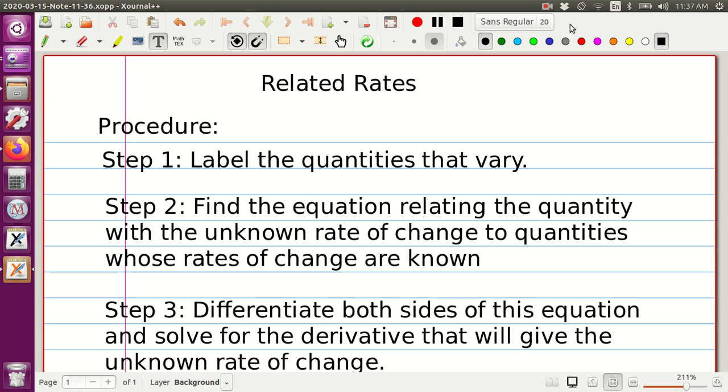What would be step one of the procedure? First, we need to label all of the quantities that vary in this problem. In step two, we would need to find the equation relating the quantities with unknown rate of change that we need to find to the quantities whose rates of change are known.